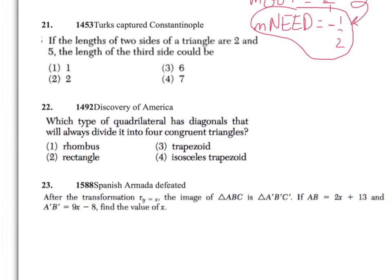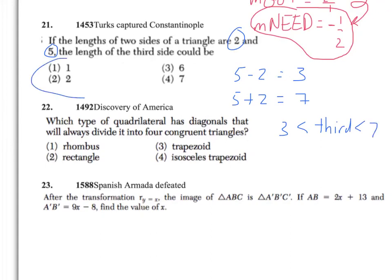For question 21, remember the quick trick for figuring out what the third side has to be. If you're given two sides and they want to know what's possible for the third side, take the two sides and subtract them, then take the two sides and add them together. That's telling you the third side has to be in between those two measurements — 3 and 7. There's only one answer that works, and that's a nice quick trick to get that question right.